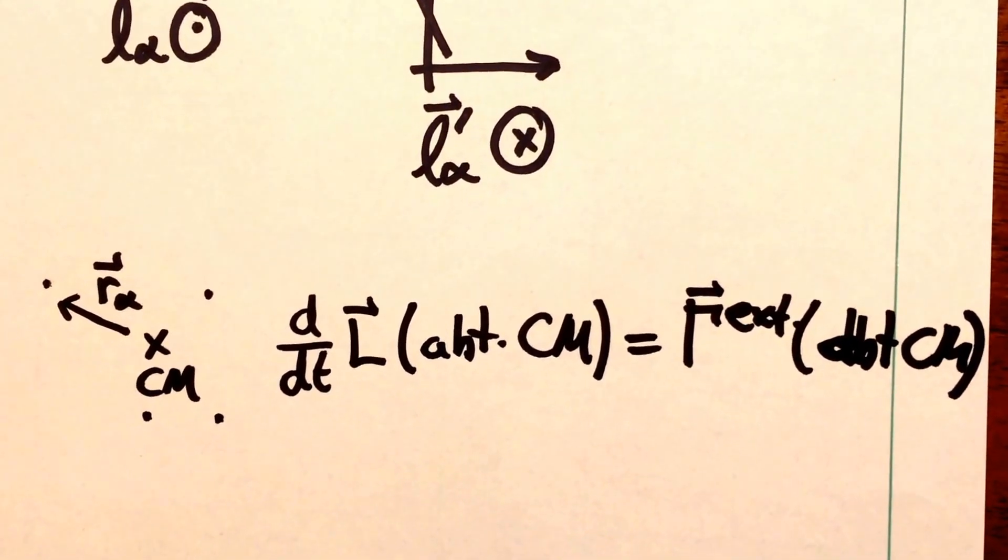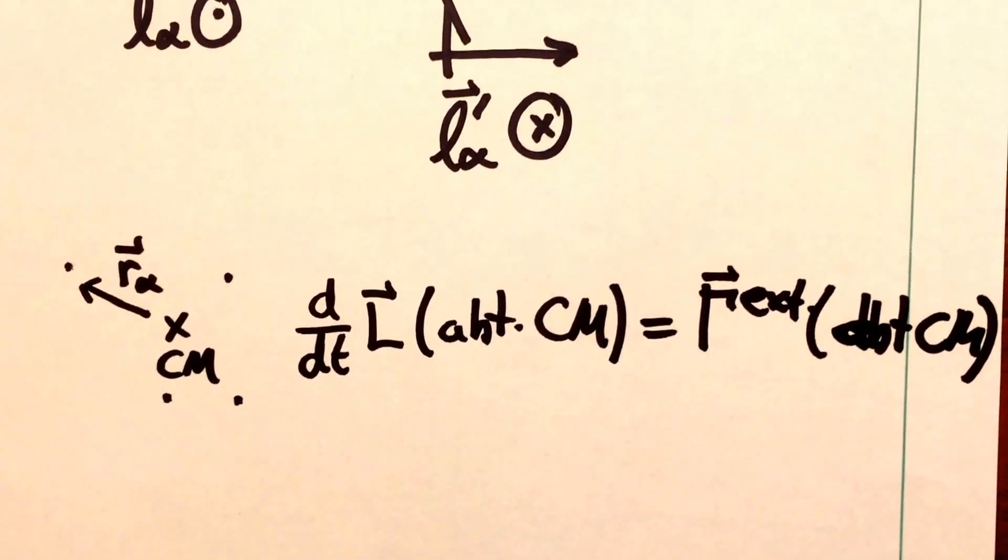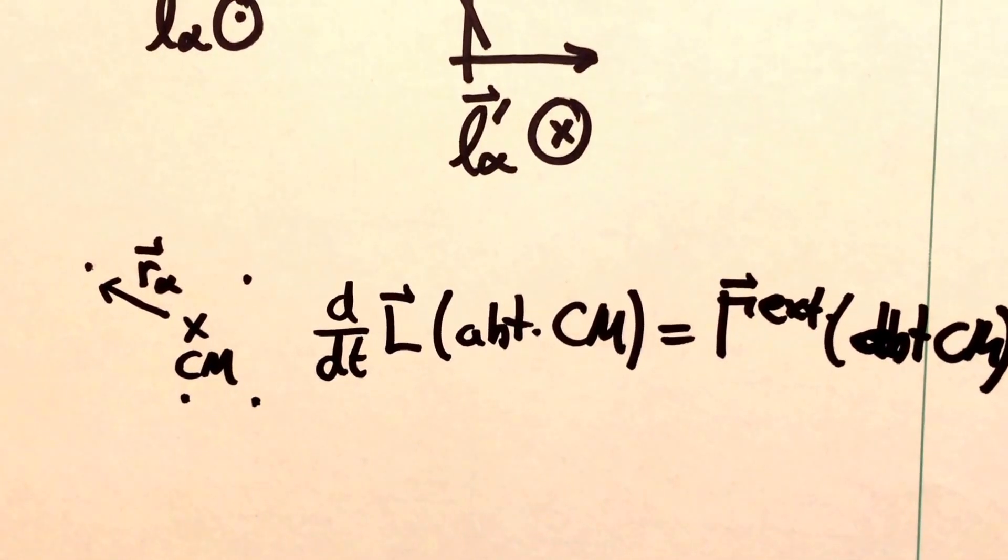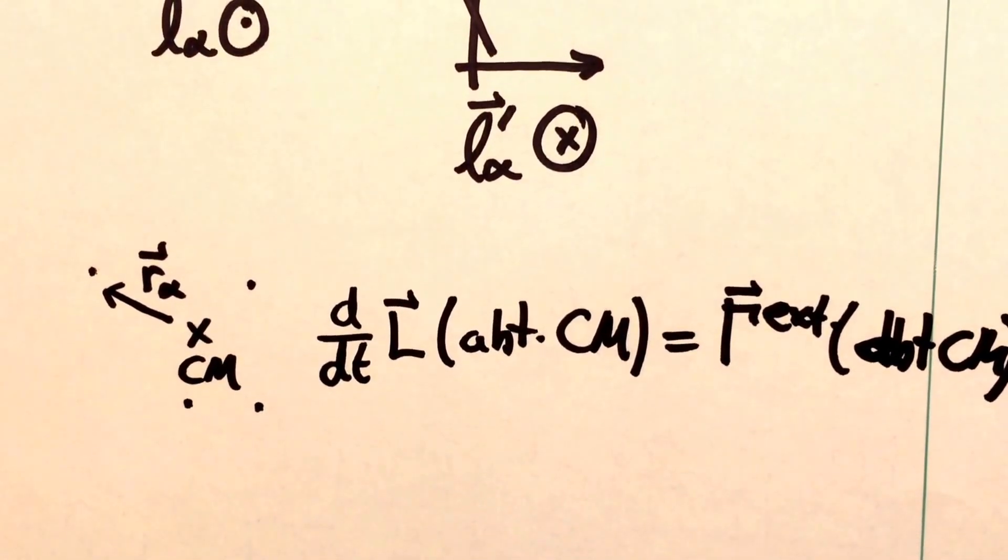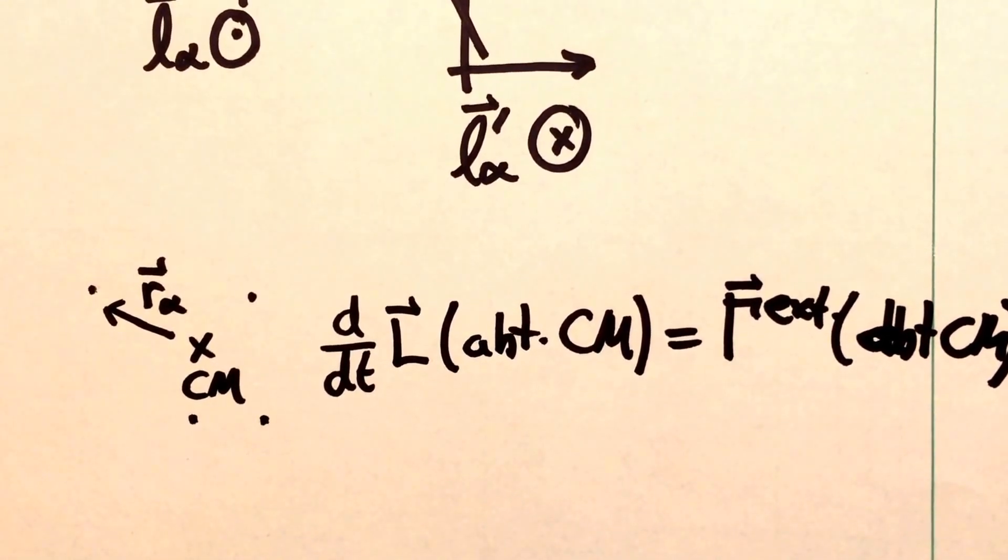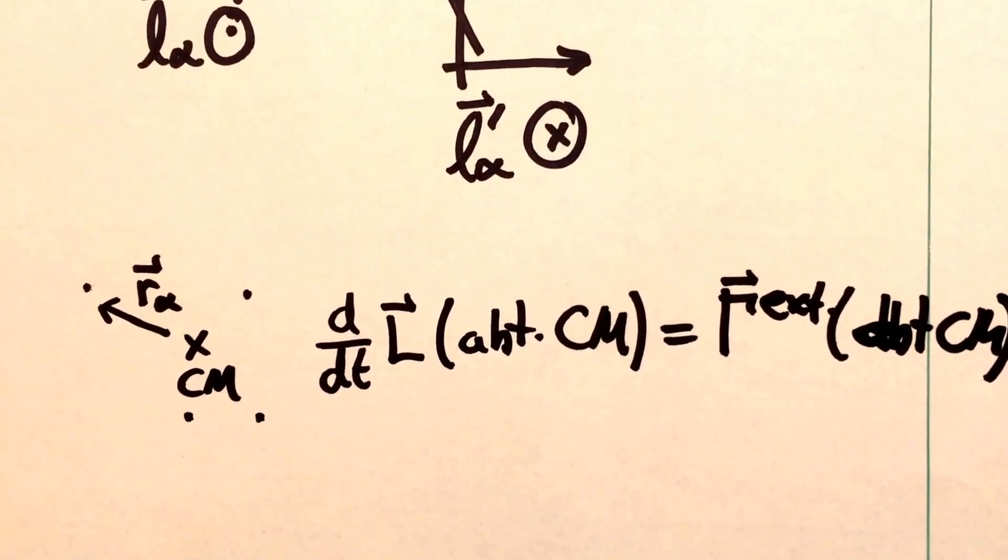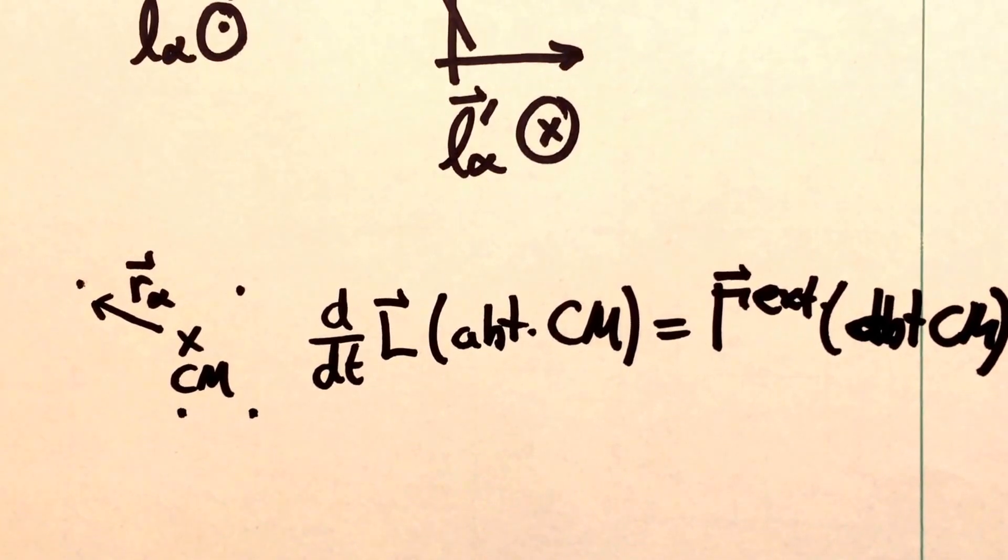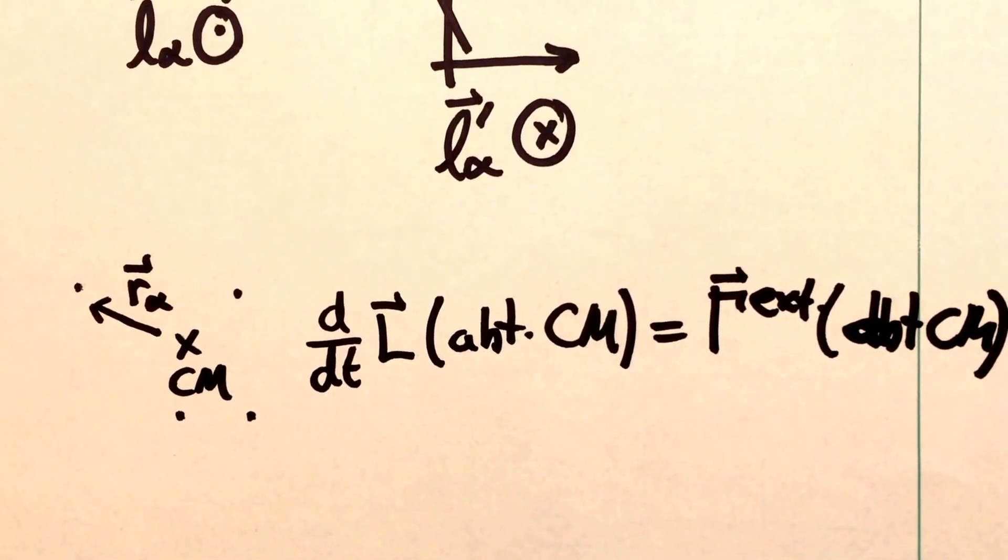It turns out that even if the center of mass itself is an accelerated reference frame, so even if the whole body itself feels an acceleration so that the center of mass is not an inertial frame, this equality still holds. We're not going to prove it here, but that means that this is a very powerful choice of coordinate system.